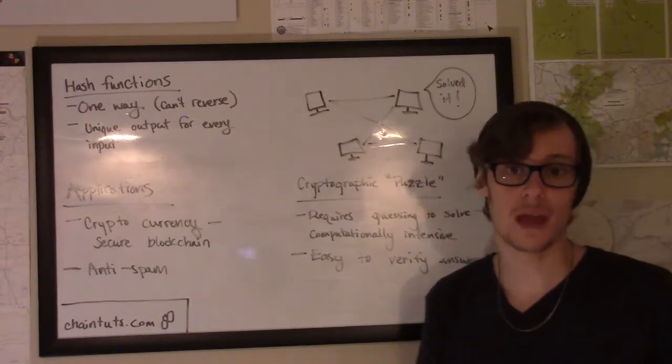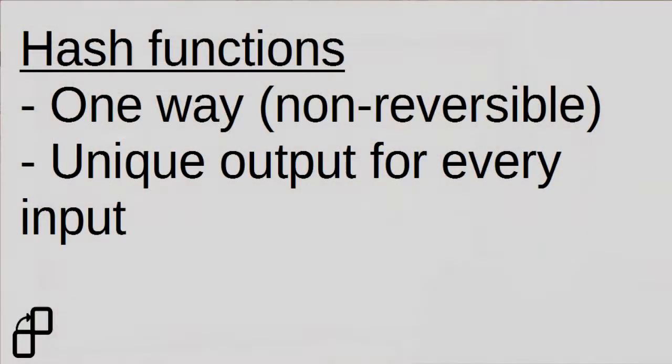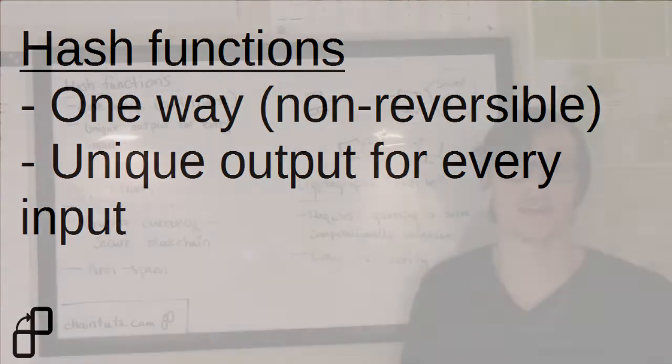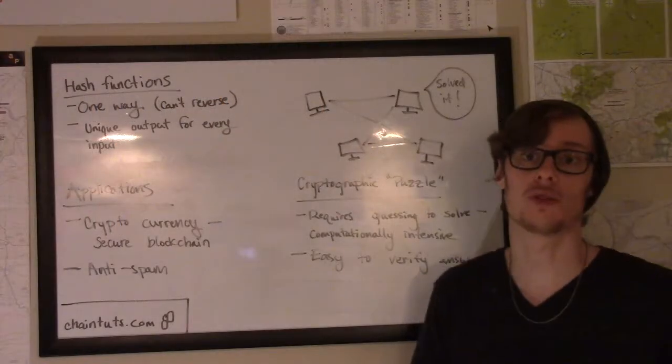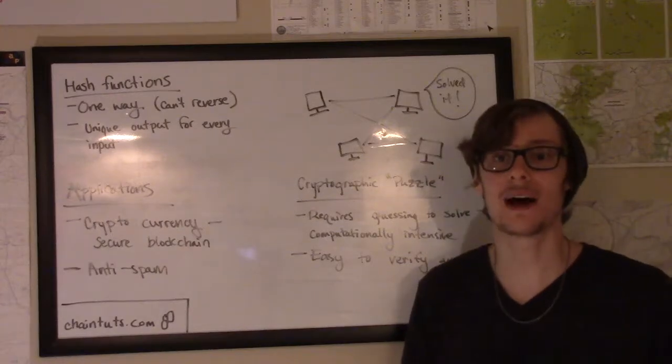You can't reverse a hash function. So if you give it some input and you get the output known as the hash, you can't feed the hash back into that function or any other kind of algorithm to find out what the original input was. It's completely non-reversible.